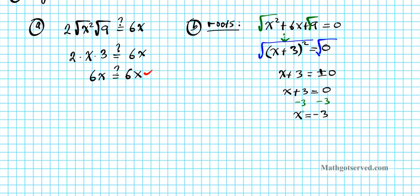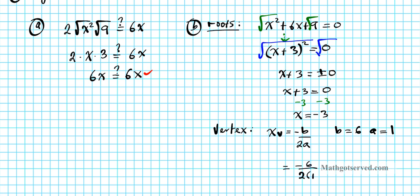We have a double root situation here — both roots are identical at x equals negative 3. Next, we find the vertex using the formula x-vertex equals negative b over 2a. In this problem, b is 6 and a is 1, so we get negative 6 over 2 times 1, which equals negative 6 over 2, which equals negative 3. Notice that the roots and the x-coordinate of the vertex are the same — that's because in a double root situation, the vertex falls on the roots.